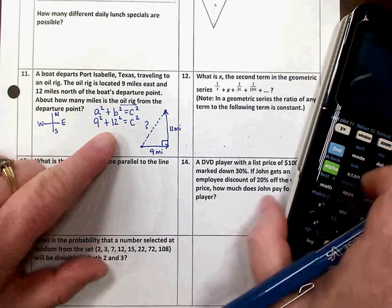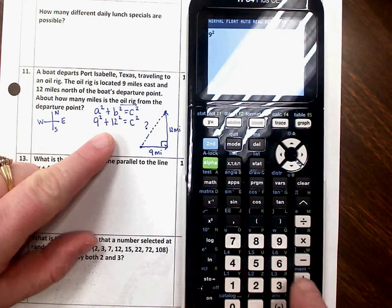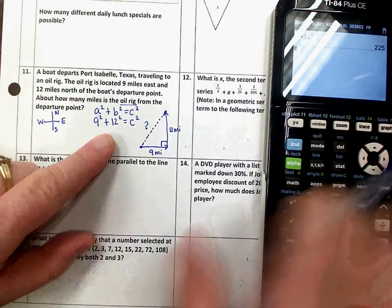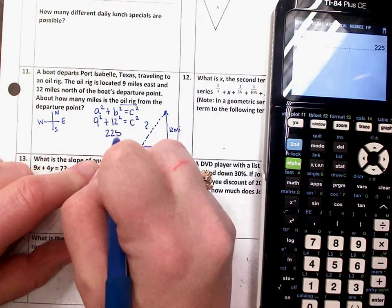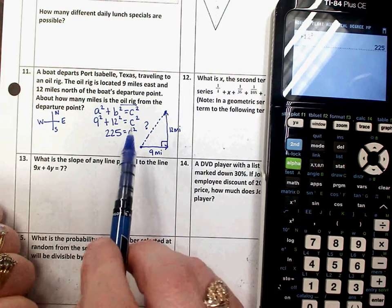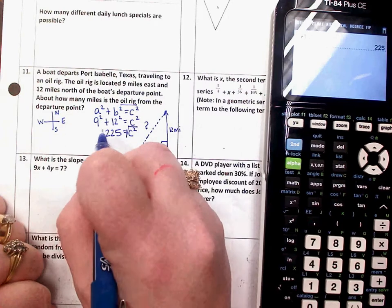So I'm going to simplify the left side of the equation by putting in my calculator 9 squared plus 12 squared. And that's 225. Now that's not my distance. Remember, that is C squared. To get my C value, I need to undo that squaring by taking the square root of each side.